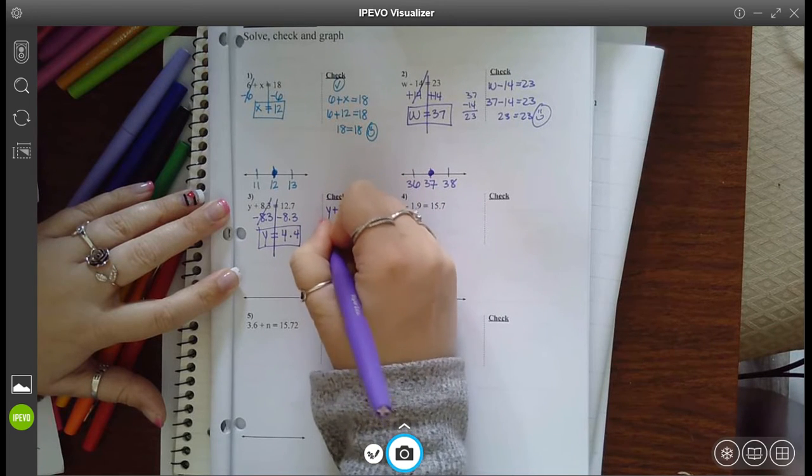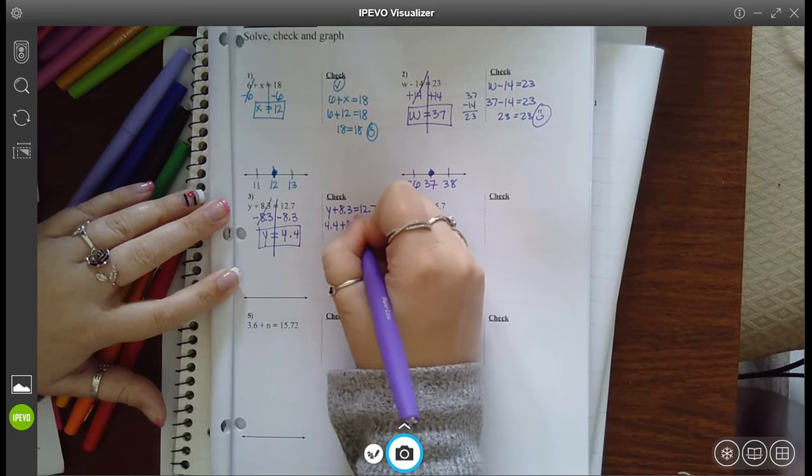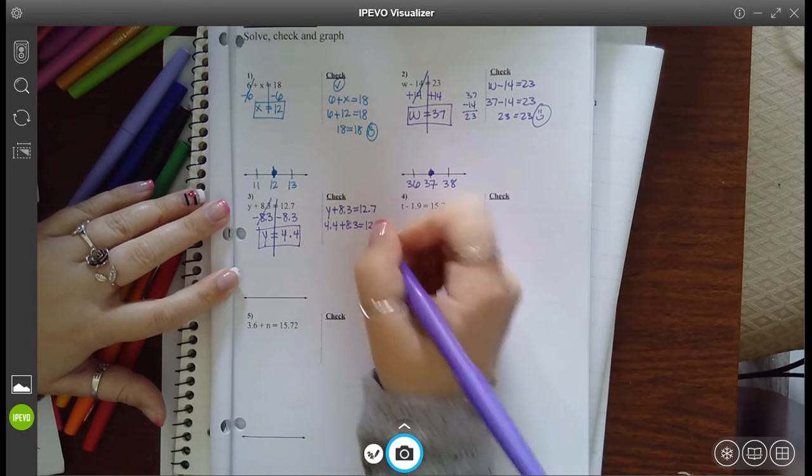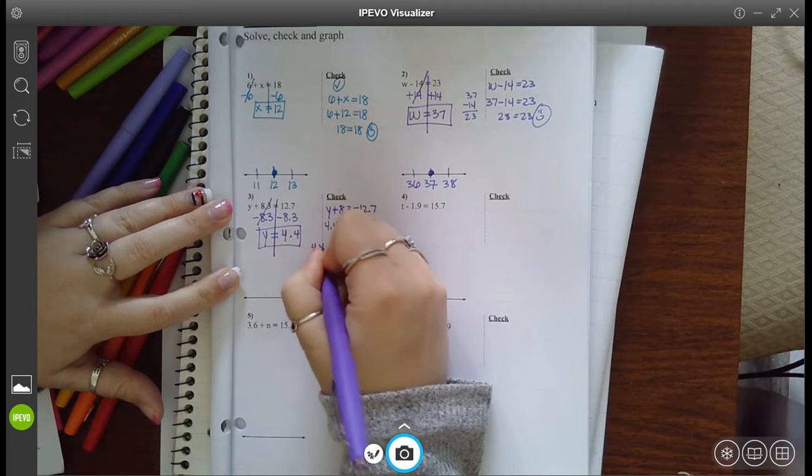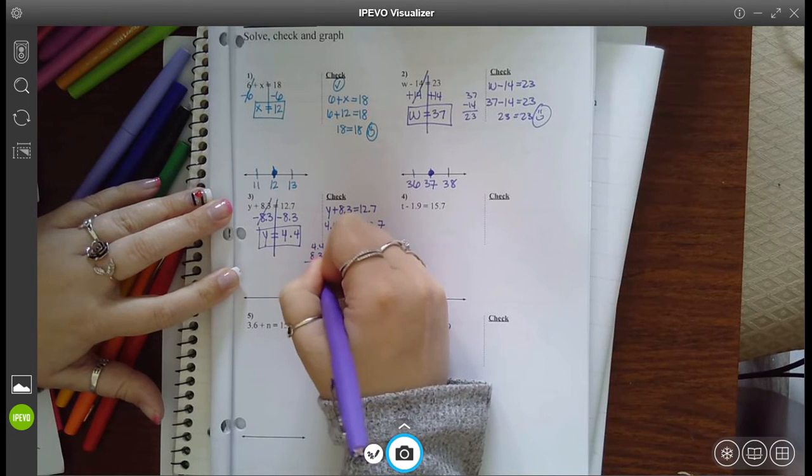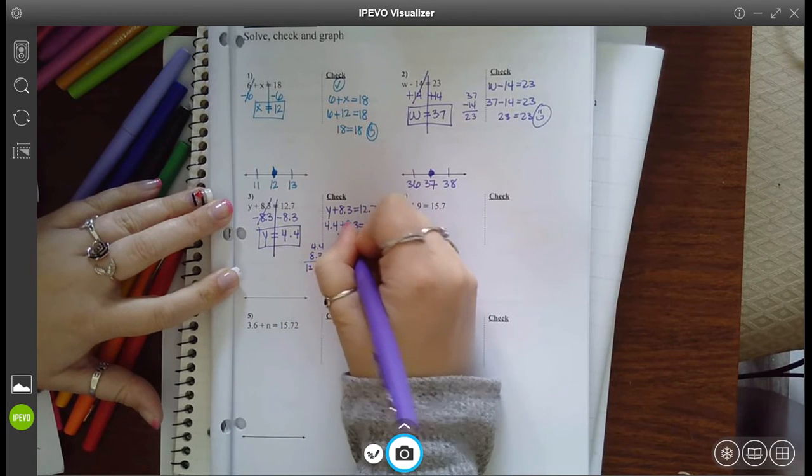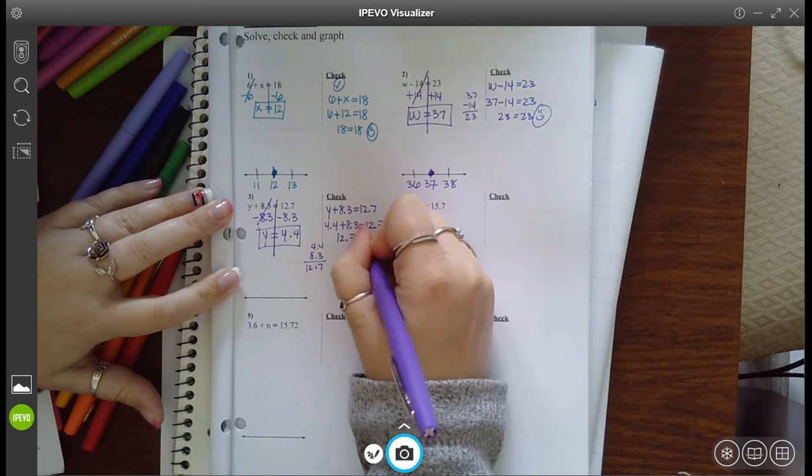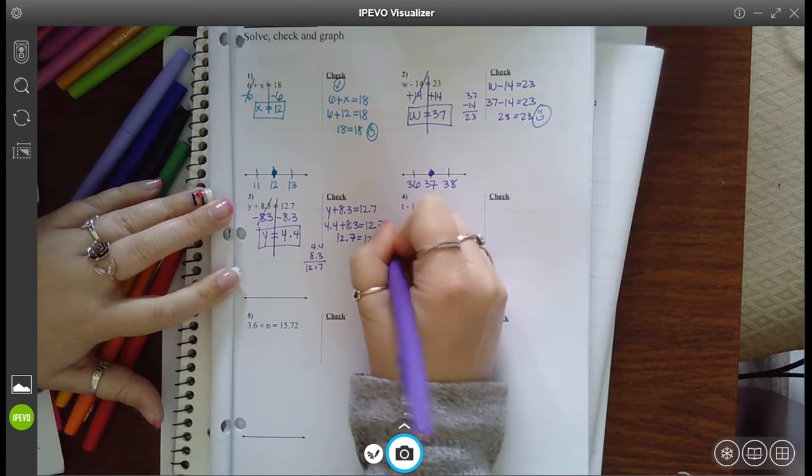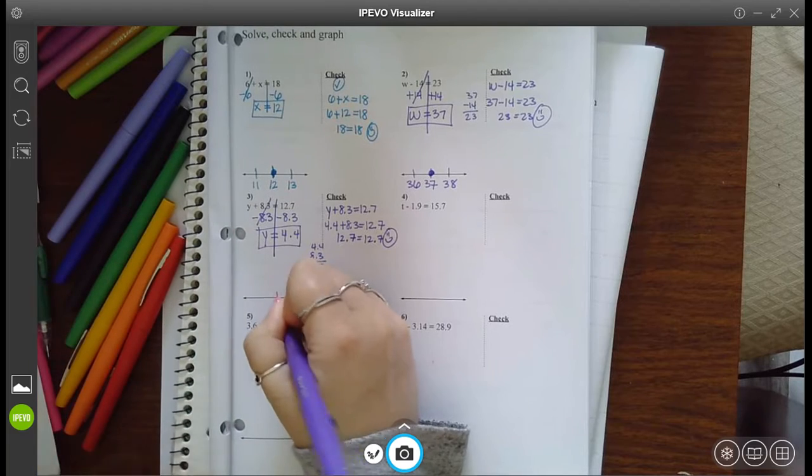Okay, now you have y plus 8.3 equals 12.7. I think y is 4.4. So now you have to try to test that. 0.4 and 0.3 make 0.7, 4 and 8 make 12. So 12.7 is what that simplifies to. And that's equal to the other side. So true statement, which means 4.4 is indeed the correct answer.